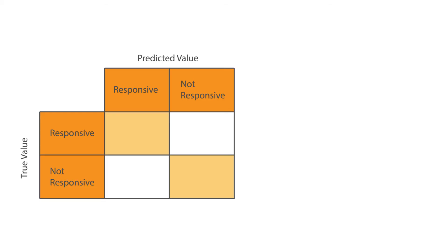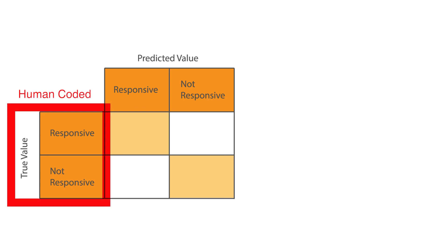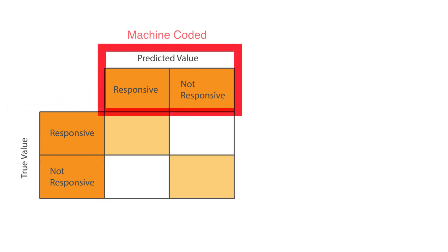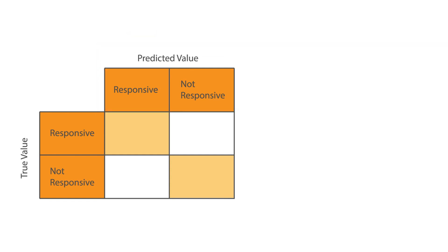Next, let's talk about recall. Recall answers this question: out of all the responsive or relevant documents in a population, how many are you actually finding? A confusion matrix shows us the relationship between the actual responsiveness of a document and what the machine predicts that value to be. On the left-hand side of the matrix, you have two values: the true responsive and the true not responsive. On top, we have the machine predicted responsive and not responsive values. Let's look at an example to understand recall in the confusion matrix.